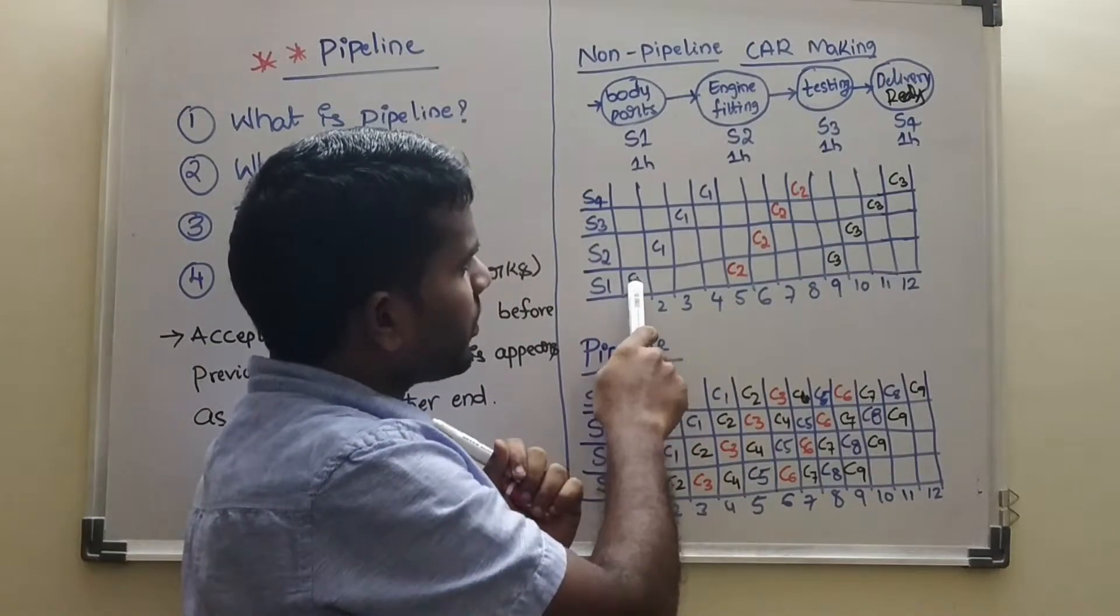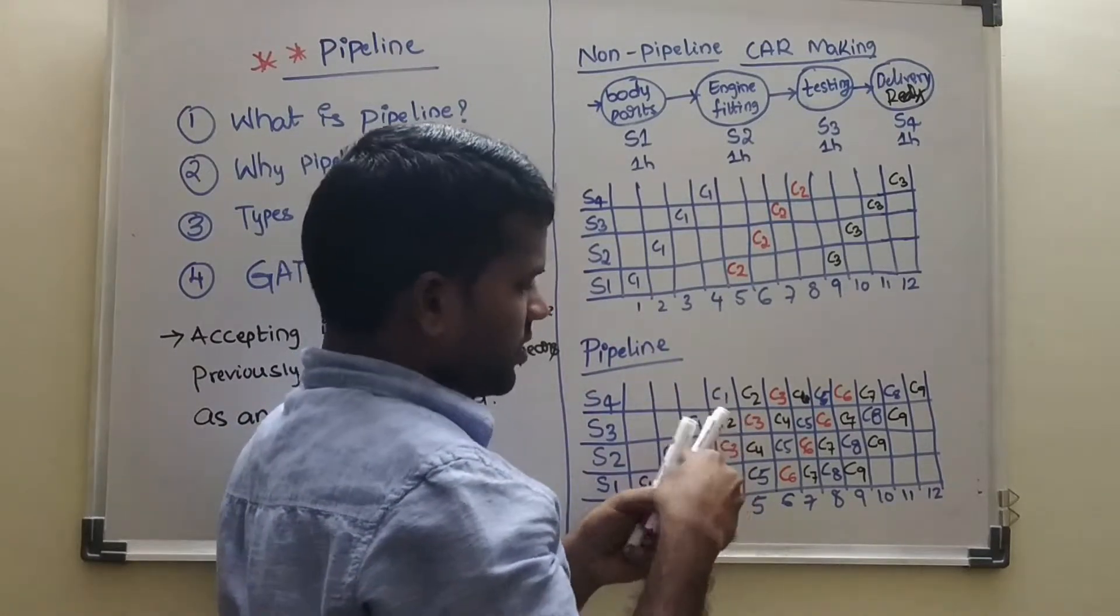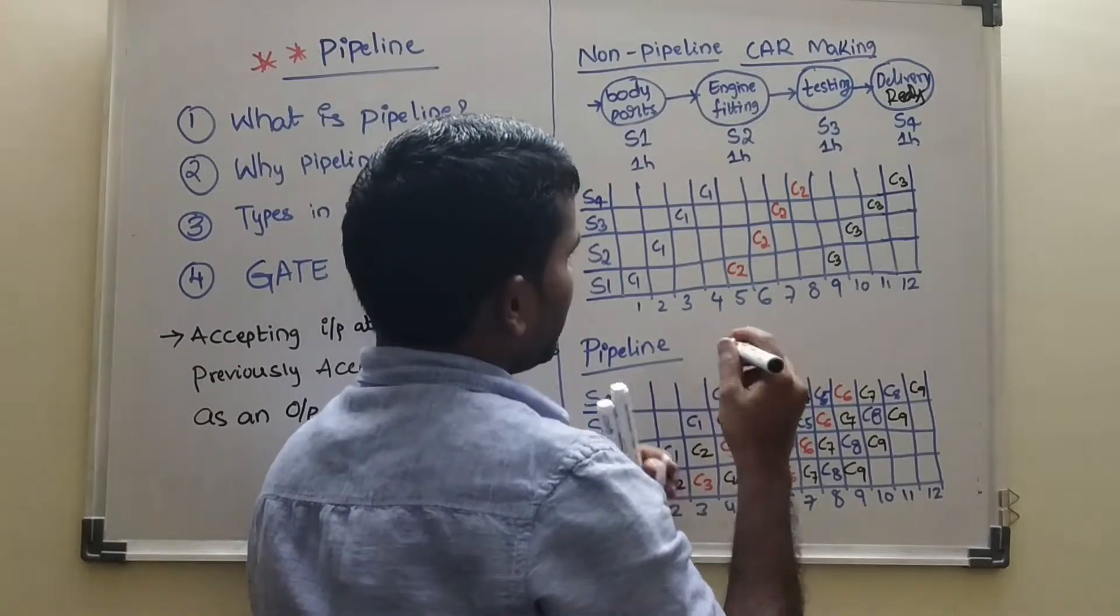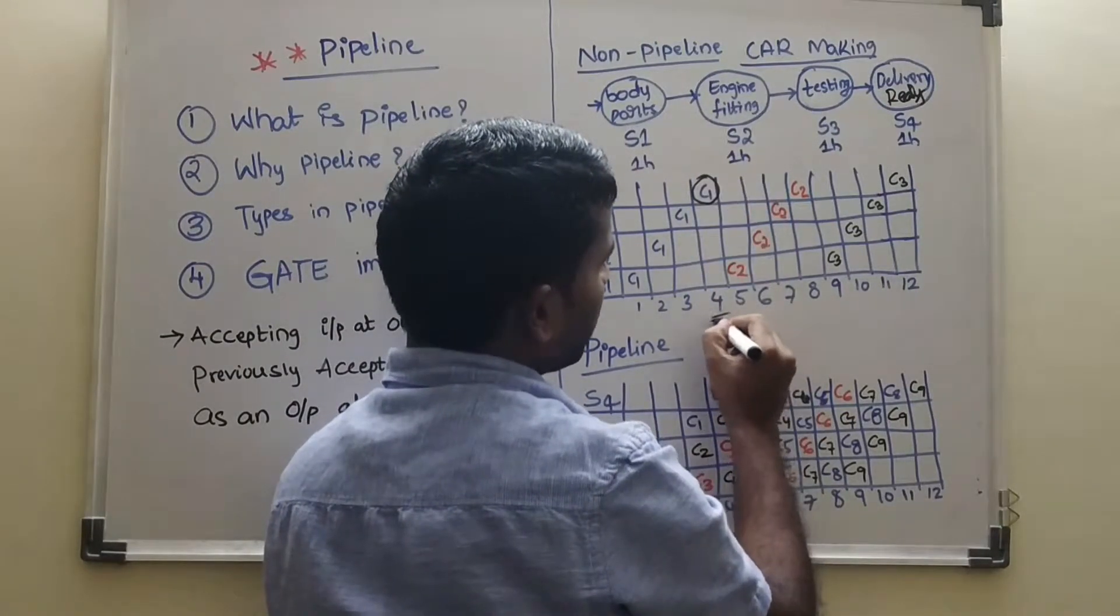In stage 1, C1 is going, going, going, going. See, here what happen? All these stages are wasted. Till it gives output. It gives output at 4th hour.